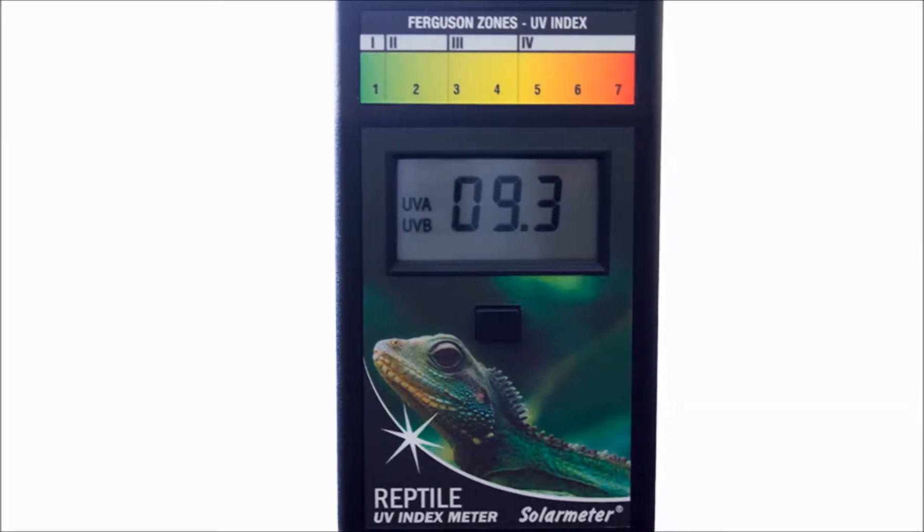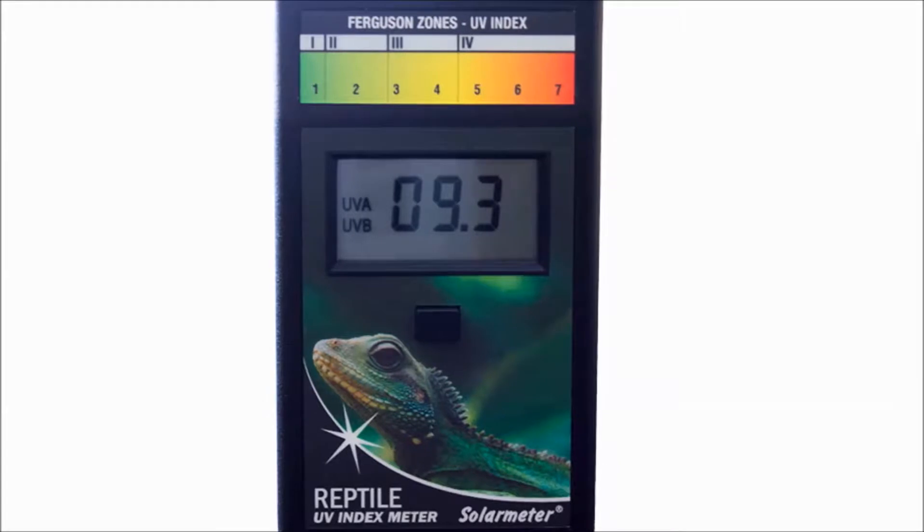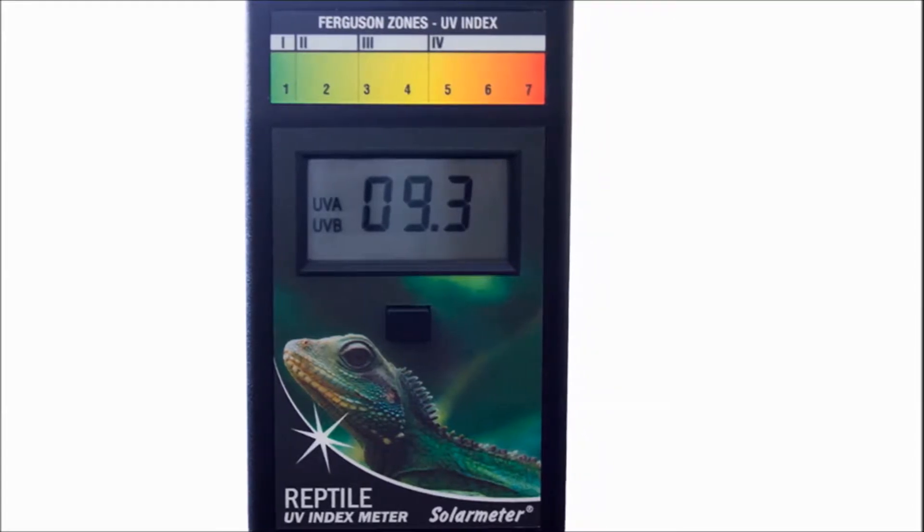The NIST traceable Model 6.5R features an irradiation range of 0-199.9 UV Index and a response of 280-400 nm.